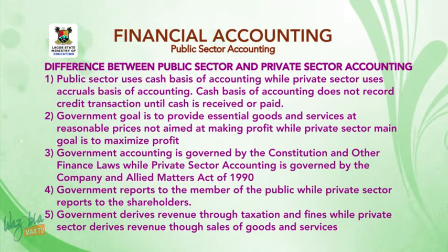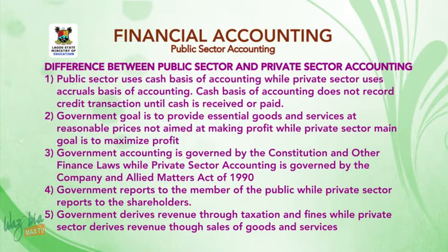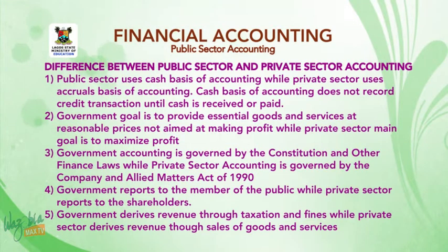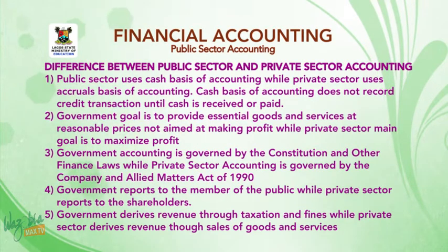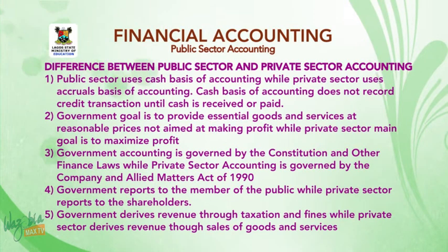Three, government accounting is governed by the constitution and other finance laws, while private sector accounting is governed by the Companies and Allied Matters Act of 1990. Four, government reports to the members of the public, while private sector reports to the shareholders. Five, government derives revenue through taxation and fines, while private sector derives revenue through sales of goods and services.